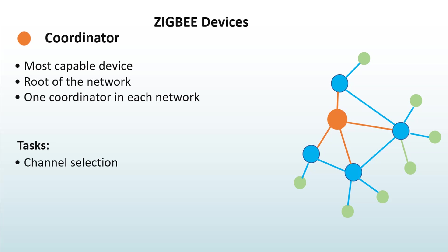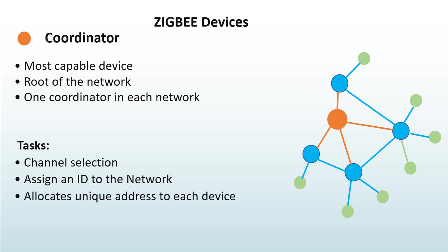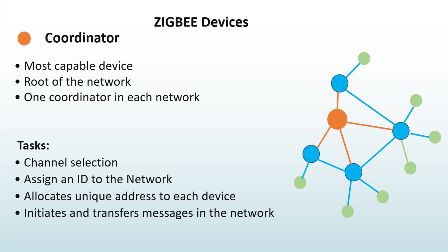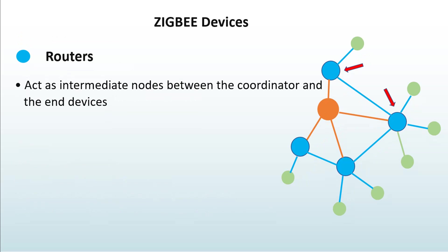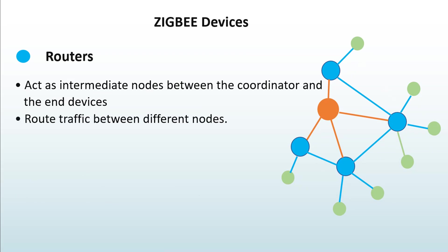Before the coordinator starts the network, it automatically performs a channel scan to select a good channel — meaning one with the least interference. It also assigns a unique identifier to the network and allocates a unique address to each device that joins. The coordinator also initiates and transfers messages within the network.